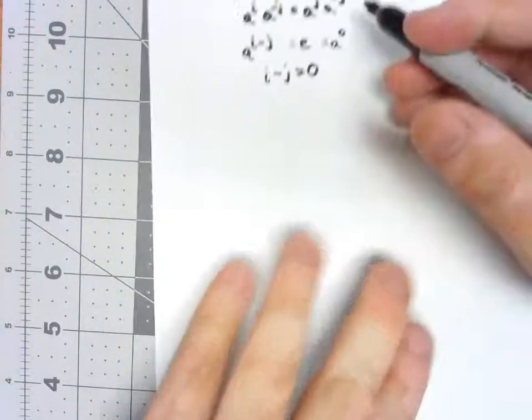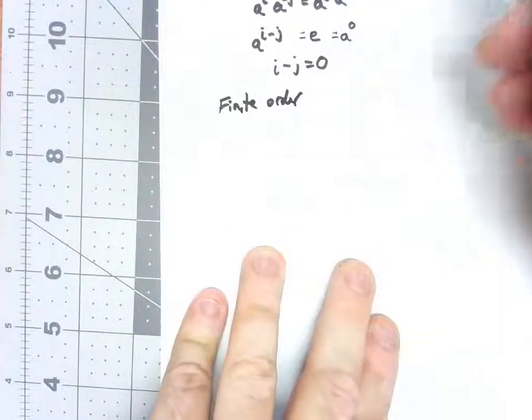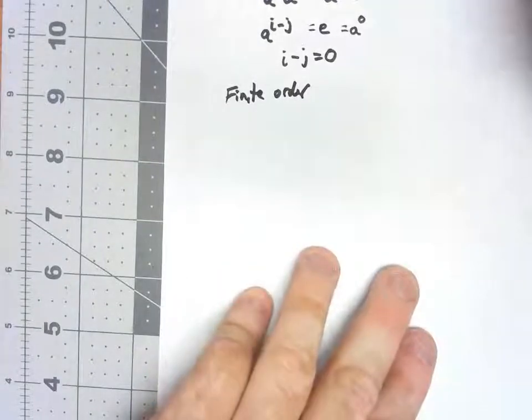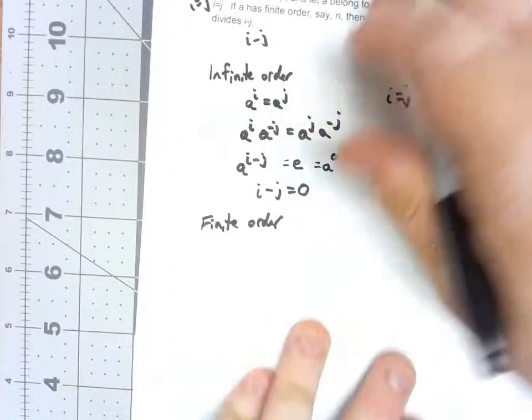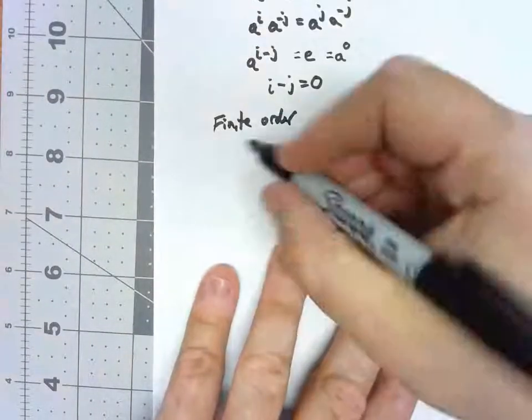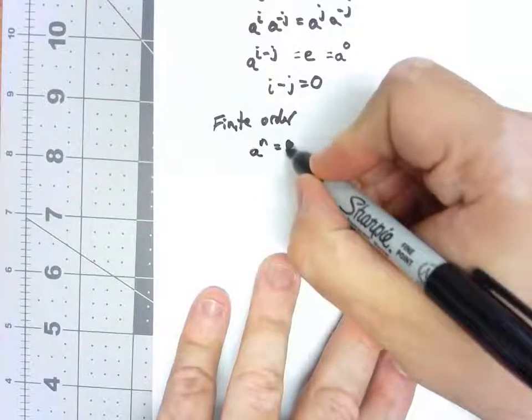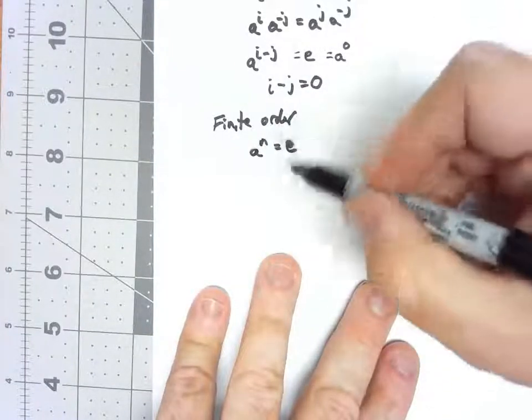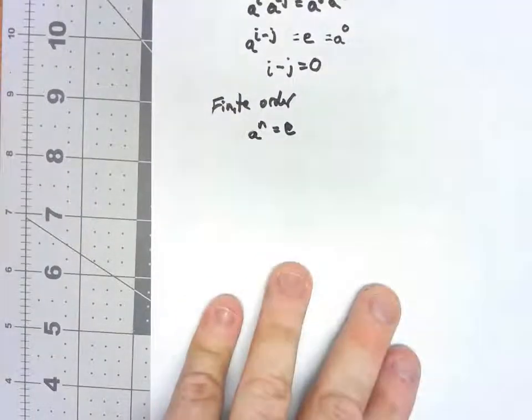Now what about the finite order case? So we're going to say A has a finite order, which we're going to call N, so that means that we know that A to the N equals E, but no smaller element there does equal E.